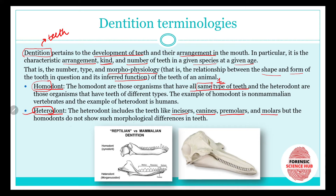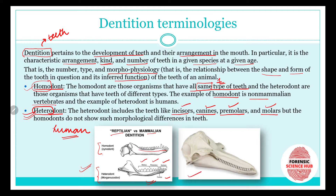Homodonts show no morphological differences in their teeth. The example of homodont is non-mammalian vertebrates, while the example of heterodont is humans, who have four types of teeth. Looking at this picture of reptile versus mammalian dentition, you can see homodont in reptiles — all teeth are the same — while mammals show heterodont dentition. This dolphin skull also shows homodont dentition, with all teeth exactly the same.